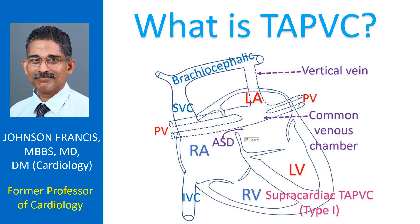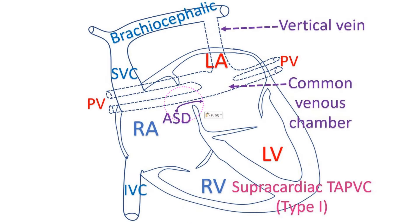Pulmonary veins are the blood vessels returning oxygenated blood from the lungs to the heart. The right and left atria are the upper chambers of the heart. When all the pulmonary veins join the right side of the heart instead of the left side, a defect in the wall between the upper chambers known as atrial septal defect is needed to maintain life. Otherwise, the body will not get any oxygenated blood.